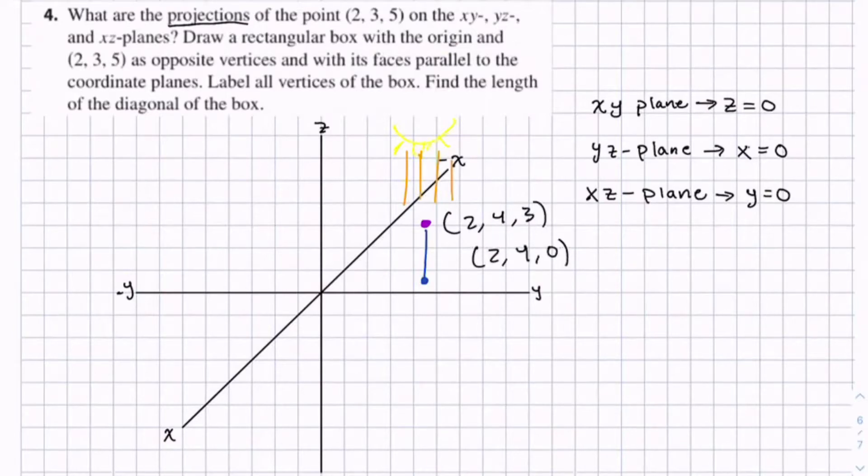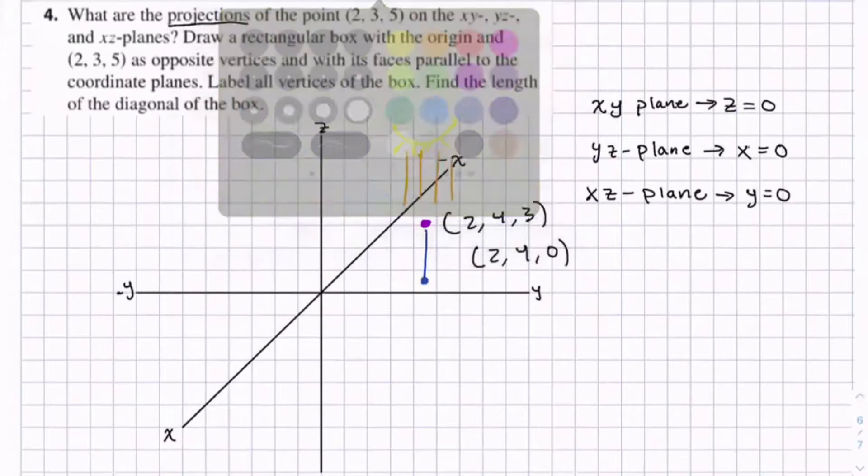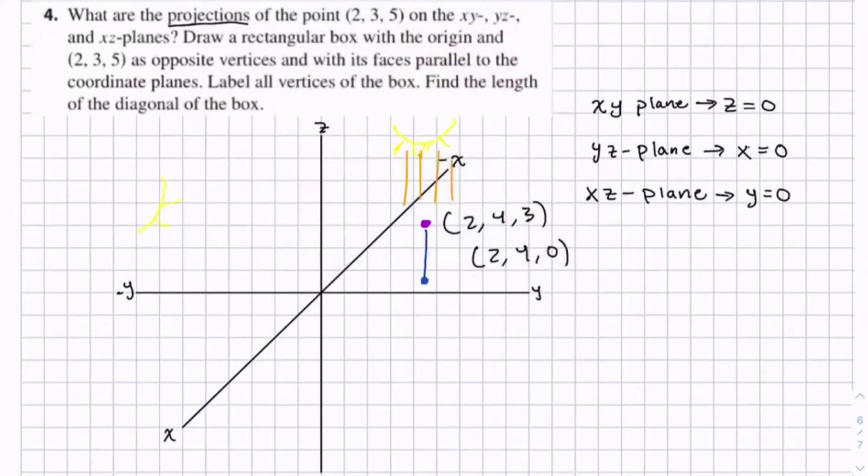And you can do the same thing for the xz and yz plane, but your light source would be like this, or like this. It would be perpendicular to whichever plane you're trying to find the projection of.